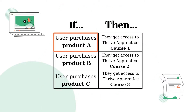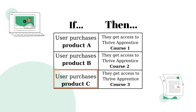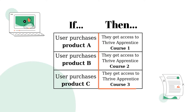So, let's say someone purchases product A, they get access to course 1. If they purchase product B, they get access to course 2. And if they purchase product C, they get access to course 3. This means we have three different products in our payment processor and each of them will give access to a different TRIVE Apprentice product. This can be done in a single automation using advanced data mapping, and we can actually do this in two different ways. In this video, I'm going to show you both of them.